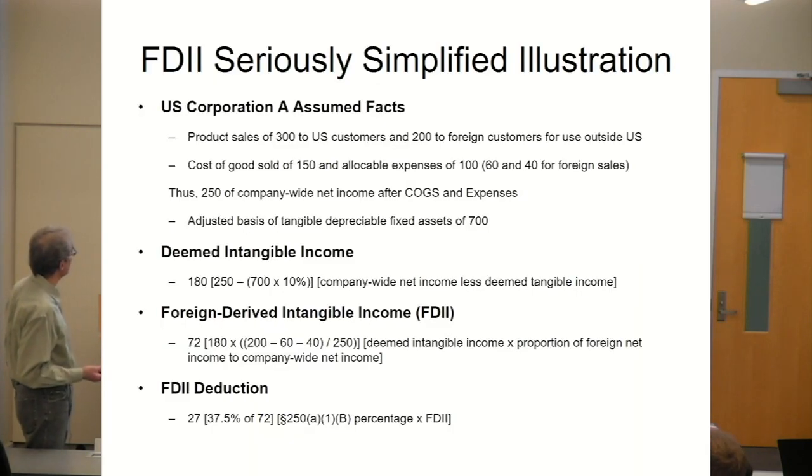Product sales of 300 to U.S. customers, 200 to foreign customers for use outside the U.S., cost of sales and allocable expenses. 500 of sales in total, 250 of cost of sales and expenses, gives 250 of company-wide income after cost of goods sold and expenses.